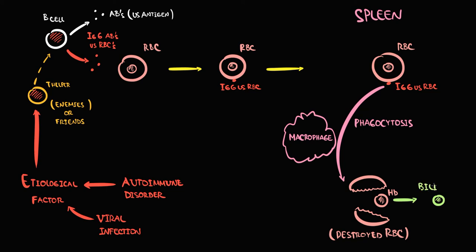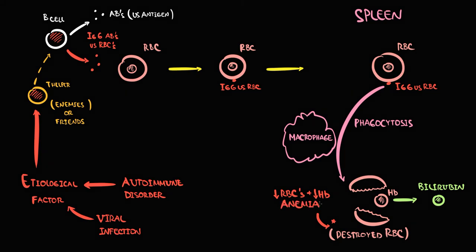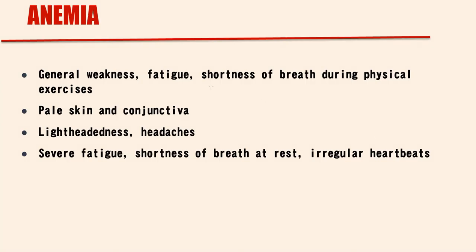As a result, the amount of red blood cells in circulation decreases. With decreasing red blood cells, the concentration of hemoglobin decreases, and decreasing hemoglobin is called anemia. Anemia manifests with weakness, fatigue, and shortness of breath during physical exercise. Patients with anemia will also have pale skin and pale conjunctiva.